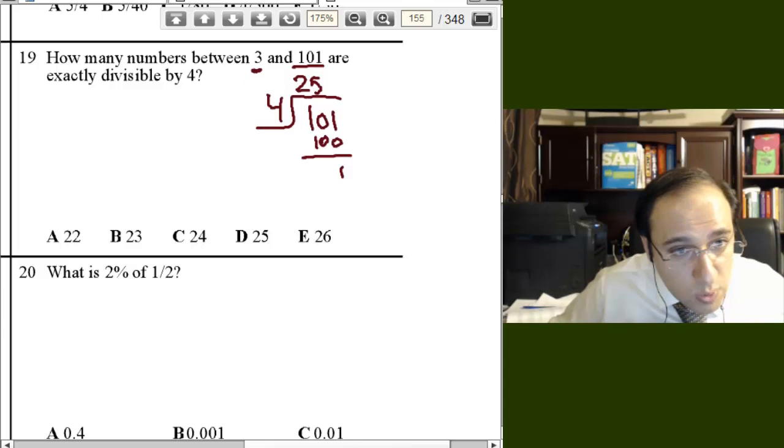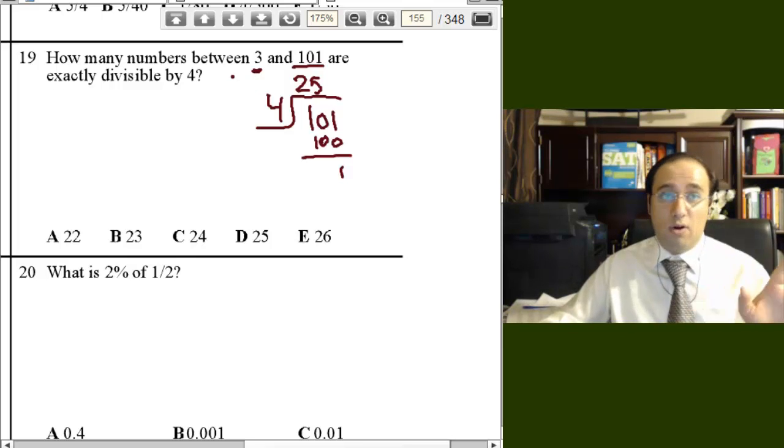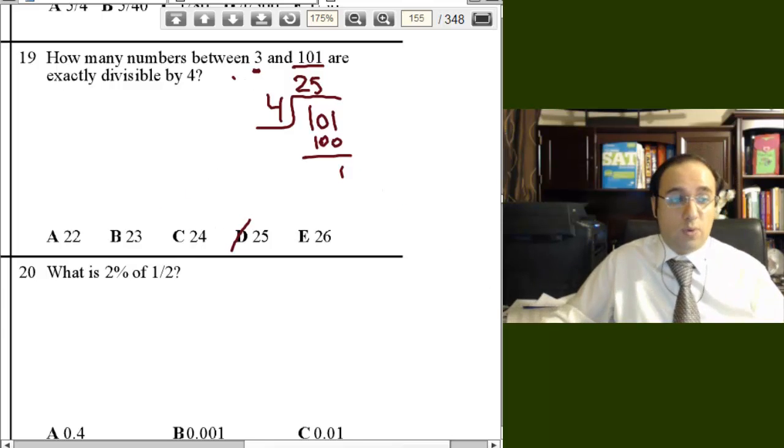But the question is set between 3. So, first thing you ask yourself, is there any multiple of 4 smaller than 3? Is there any multiple of 4 before 3? No, there isn't. So, the first multiple is going to be more than 3. So, we have 25 whole multiples. So, the answer is D right away.